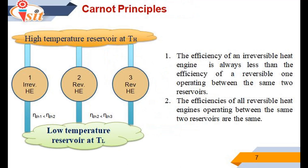The next important point is the Carnot principle. The second law of thermodynamics puts limits on the operation of cyclic devices as expressed by the Kelvin-Planck and Clausius statements. A heat engine cannot operate by exchanging heat with a single reservoir, and a refrigerator cannot operate without a net energy input from an external source. Two conclusions regarding the thermal efficiency of reversible and irreversible heat engines are known as the Carnot principles. First, the efficiency of an irreversible heat engine is always less than the efficiency of a reversible one operating between the same reservoirs. Second, the efficiencies of all reversible heat engines operating between the same two reservoirs are the same. These two statements can be proved by demonstrating that violation of either results in a violation of the second law of thermodynamics.